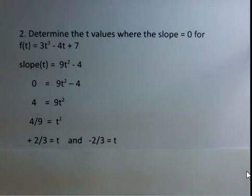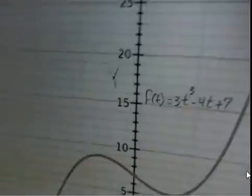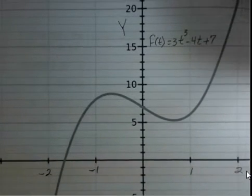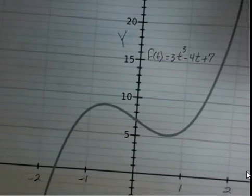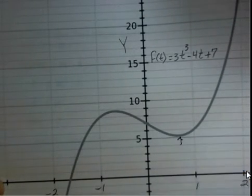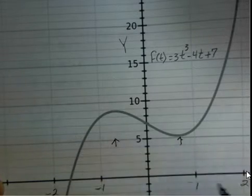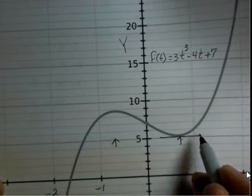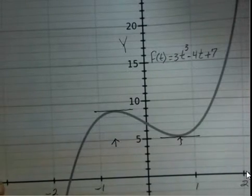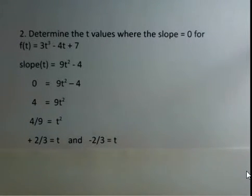Those are the two t values where the slope is 0. I have this graph here, and the slope of 0 occurs at the two-thirds position, about here, and at the minus two-thirds position, about here. That's where a tangent line would have a slope of 0. Calculus gives us this position exactly: t = +2/3 and t = -2/3.